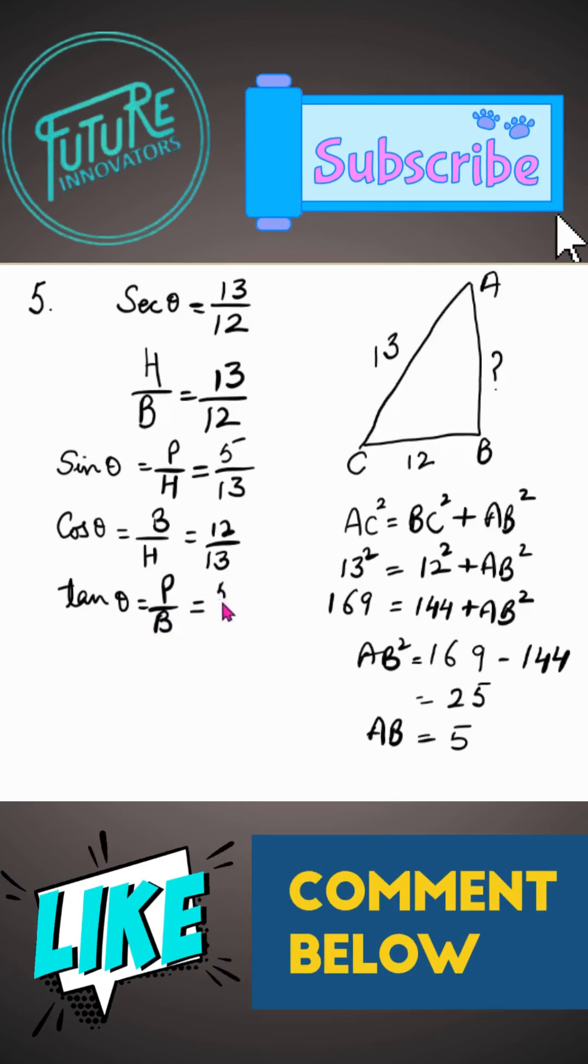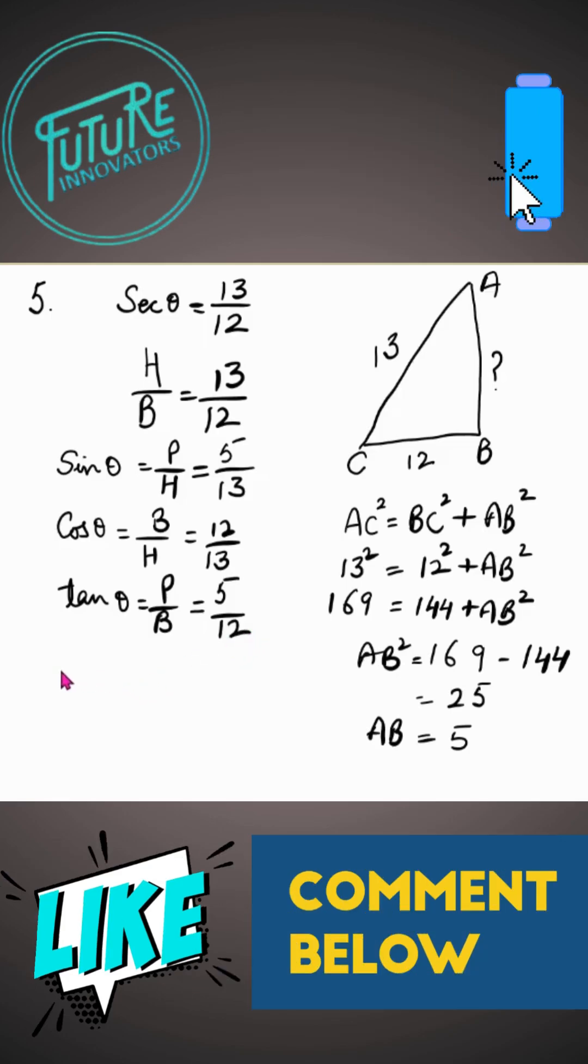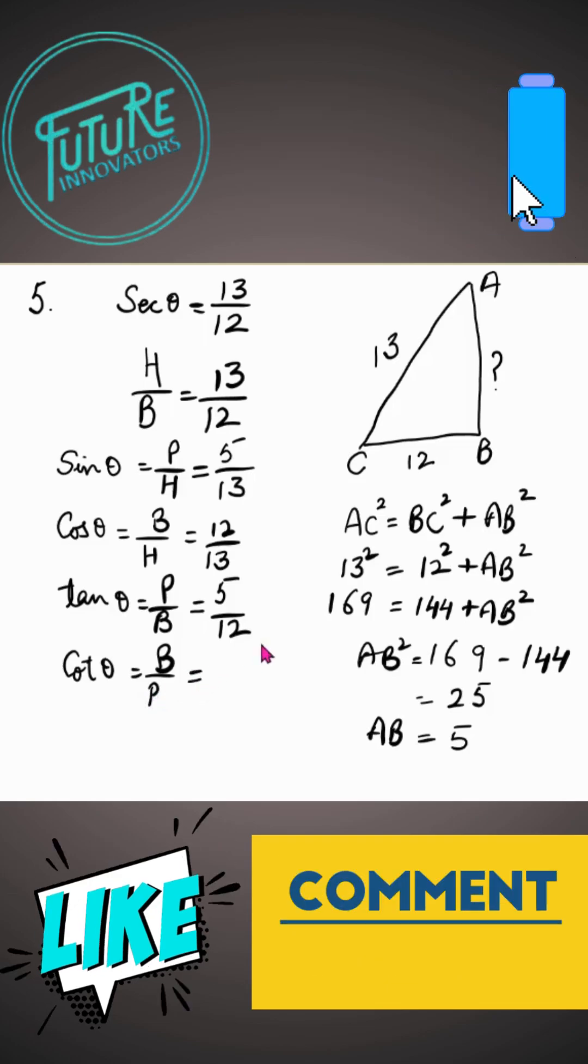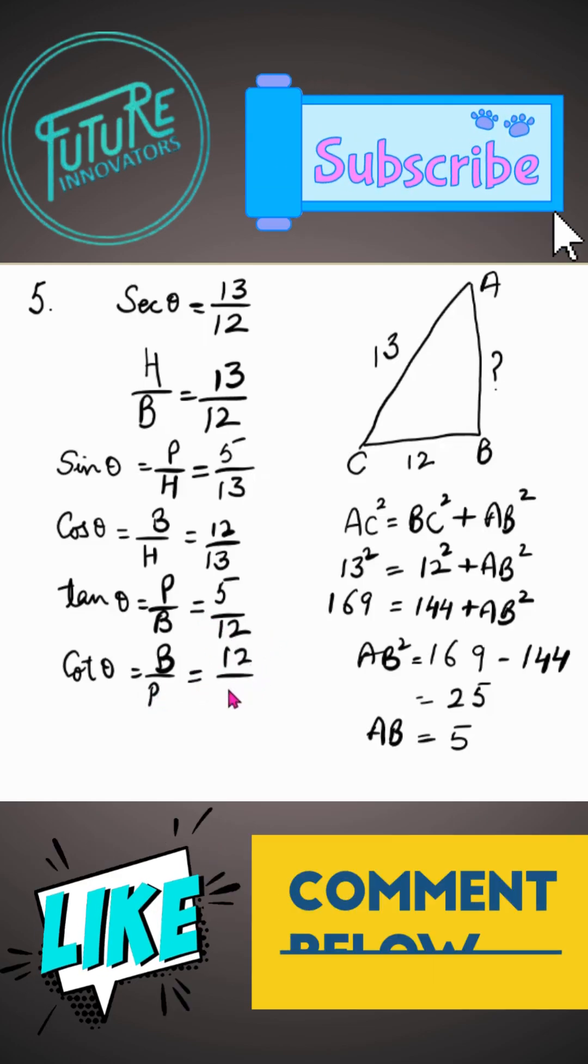Perpendicular is 5 and base is 12. Cot theta is equal to B upon P, that is 12 upon 5.